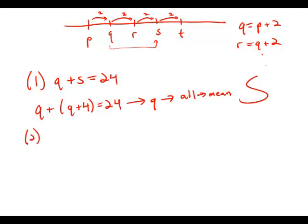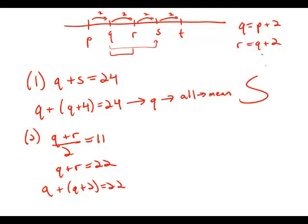Now forget statement number one. Statement number two tells us that the average of Q and R is 11. So Q plus R divided by two is 11. Q plus R equals 22. And R, of course, is two bigger than Q. So Q plus Q plus two equals 22. Well, again, we could solve for Q, which means we could find all the values, which means we could find the mean. So this statement by itself is also sufficient.